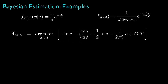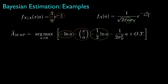The objective function is defined by the logarithm of the posterior, which for this example contains four terms that depend on the parameter and several other terms that don't. The first term comes from the leading term in the observation density. The second term comes from the exponent in the observation density. The third term comes from the leading term in the prior density. The fourth term comes from the exponential term in the prior density.